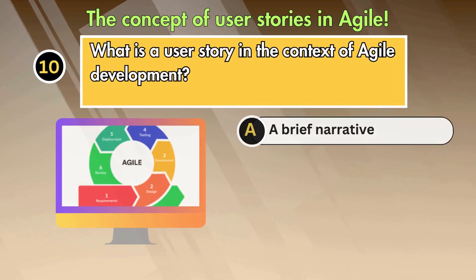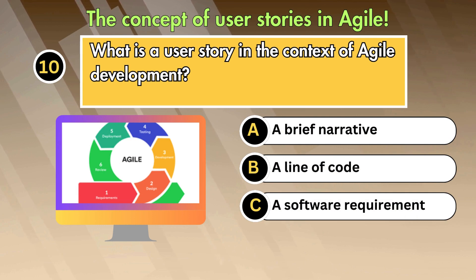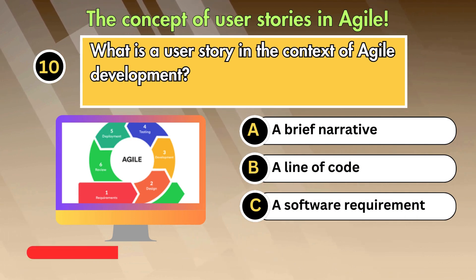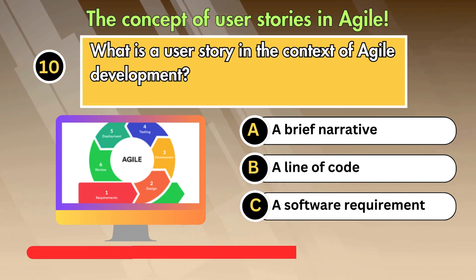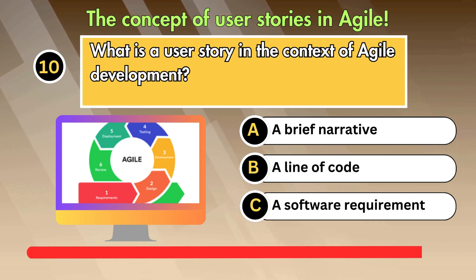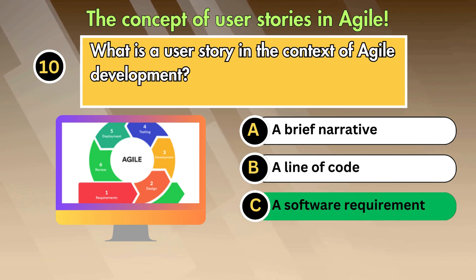What is a user story in the context of agile development? Option 1: A brief narrative. Option 2: A line of code. Option 3: A software requirement. Answer is A software requirement.